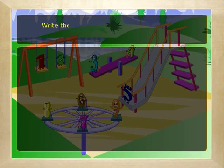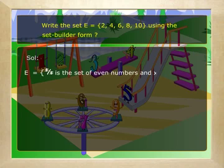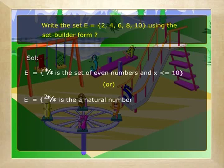Let's see another example. Write the set E = {2, 4, 6, 8, 10} using set builder form. Solution: E = {x such that x is a set of even numbers and x is less than or equal to 10}, or E = {2x such that x is a natural number and x is less than or equal to 5}.